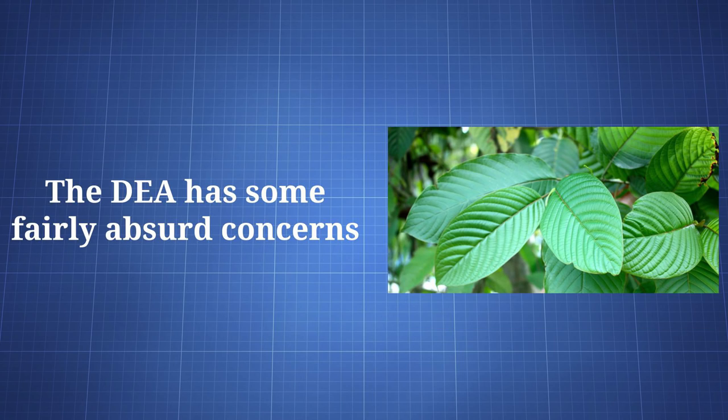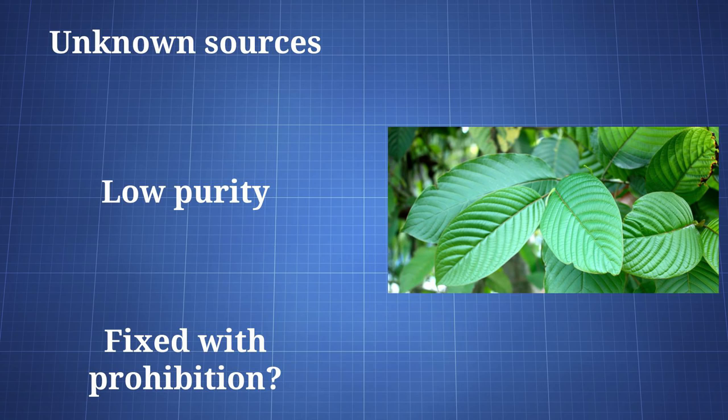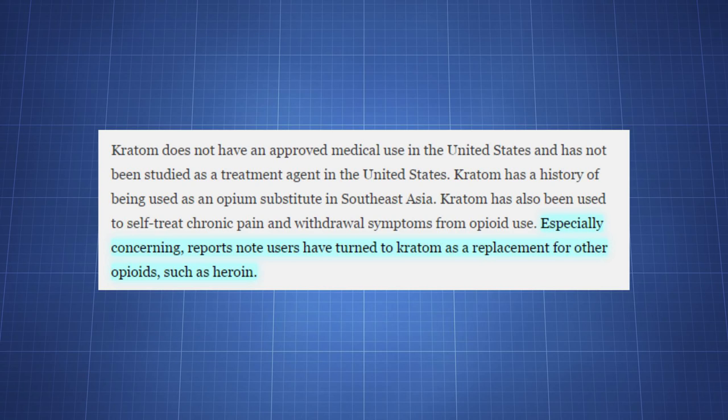There are some almost laughable problems the DEA seems to have with Kratom. First, it is worried about the drug coming from unknown sources with an unknown purity, and yet it wants to push what is left of the market into the underground, which is bound to make things worse, just as it does for other drugs. There was also this fantastic quote: especially concerning, reports note users have turned to Kratom as a replacement for other opioids, such as heroin.